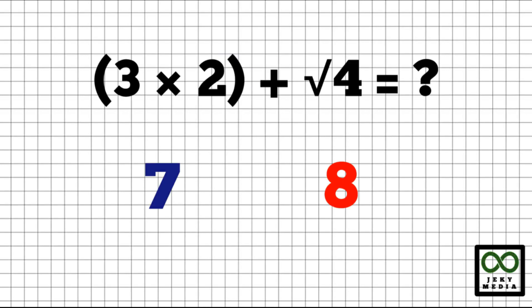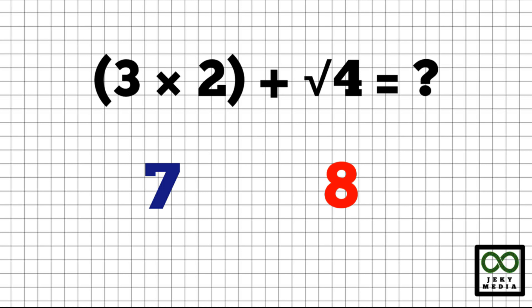We have 3 times 2 inside a parenthesis, plus the square root of 4. What should be the answer? Is it 7 or 8? According to the PEMDAS rule, we have to operate the parenthesis first, followed by the exponents.